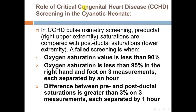Role of critical congenital heart disease screening. In cyanotic congenital heart disease, pulse oximeter screening compares pre-ductal right upper extremity saturation with post-ductal lower extremity saturation. A failed screen is when oxygen saturation is less than 90%, or oxygen saturation is less than 95% in the right hand and foot on three measures each separated by one hour, or the difference between pre- and post-ductal saturation is greater than 3% on three measures each separated by one hour.